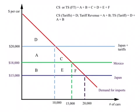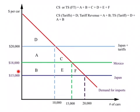Now when the U.S. imposes a tariff of $5,000, the price paid by U.S. consumers is $20,000 and 10,000 units of cars are imported. The consumer surplus with tariffs will be the area represented by letter D. Then we have the tariff revenue, which stays with the U.S. government, represented by area A plus B. So the total surplus when the U.S. imposes a tariff of $5,000 will be D plus A plus B.